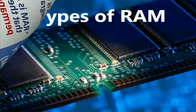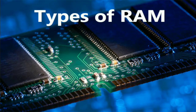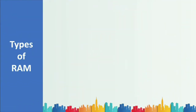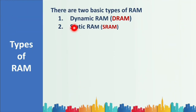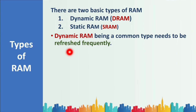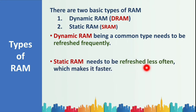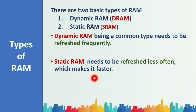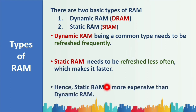There are different types of RAM: Dynamic RAM and Static RAM — that is DRAM and SRAM. Dynamic RAM being a common type needs to be refreshed frequently, while Static RAM needs to be refreshed less often, which makes it faster. Obviously, Static RAM is more expensive than Dynamic RAM.